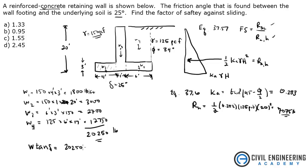So that's 20,250 tangent of 25 degrees. That gives me 9442.73. And that is our RSL, force of sliding.